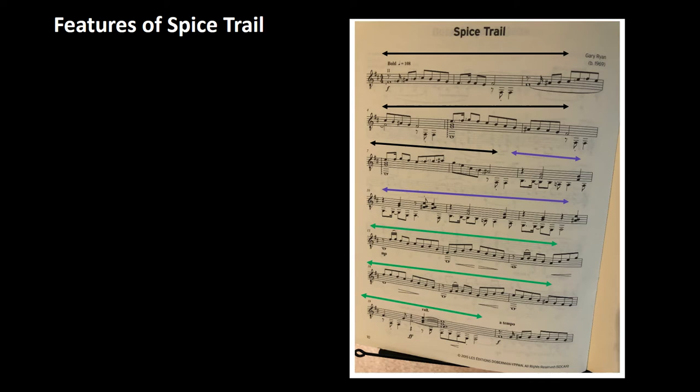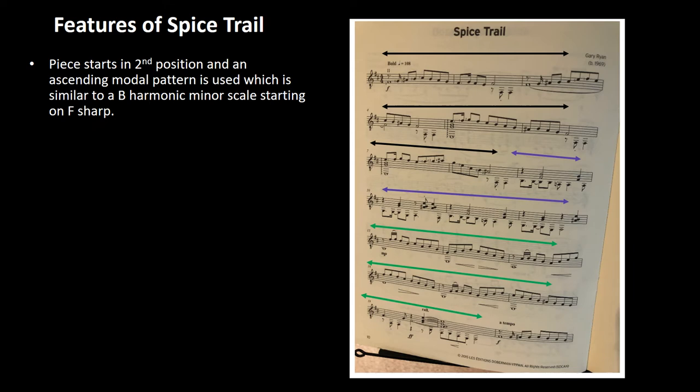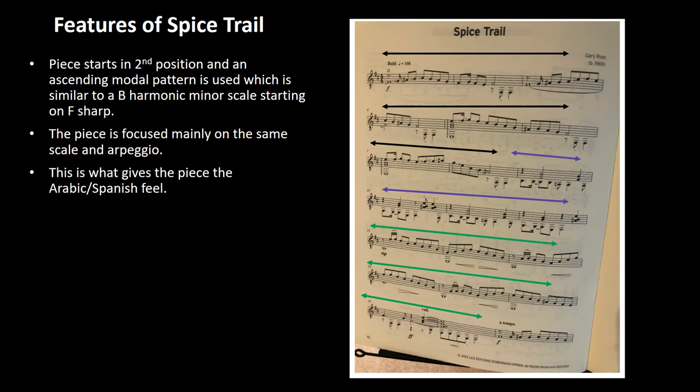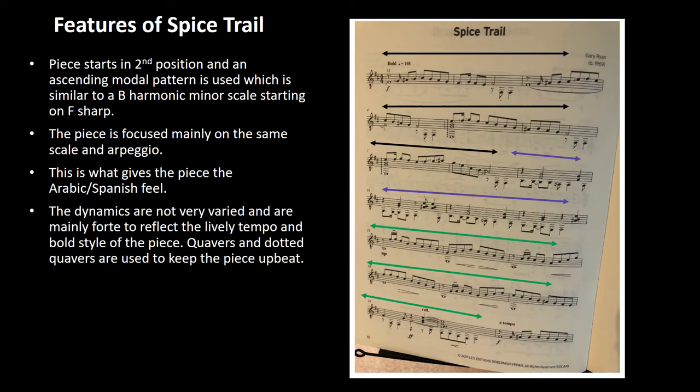There are some more features of the Spice Trail piece. The piece starts in second position and an ascending modal pattern is used, which is similar to the B harmonic minor scale starting on F sharp. The piece mainly focuses on the same scale and arpeggio. This is what gives the piece the Arabic and Spanish feel. The dynamics are not very varied and are mainly forte, to reflect the lively tempo and the bold style of the piece.